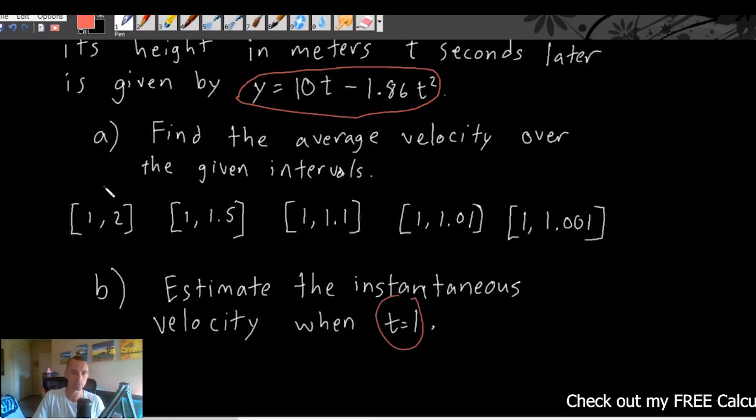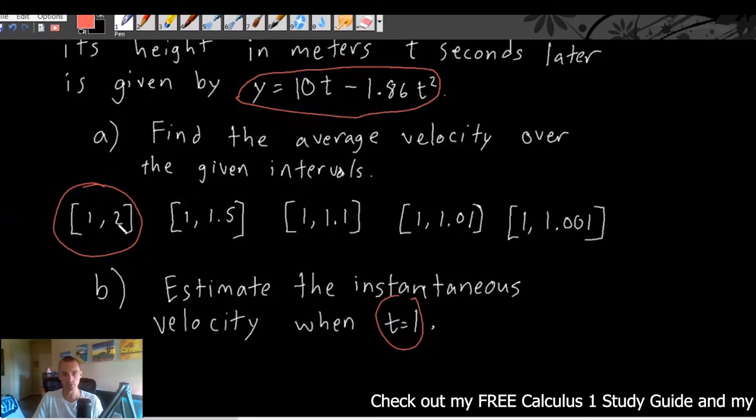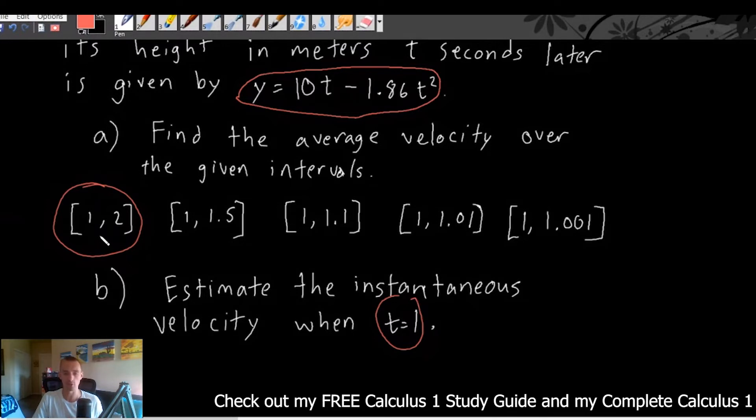So notice the difference. In part A, we're being given two time points, one second and two second, an interval of time to find the average velocity over.